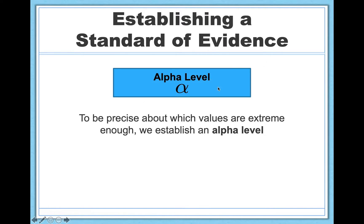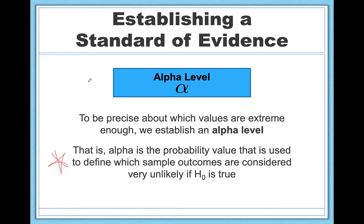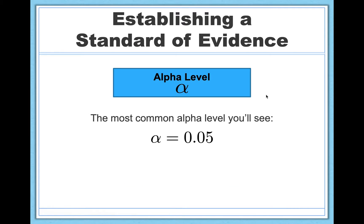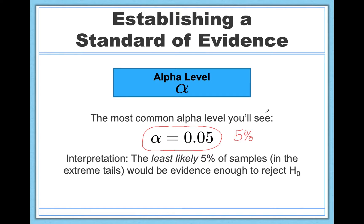The standard of evidence we call our alpha level — that's alpha, but it's not Cronbach's alpha, be careful. It's, as we often have in statistics, two different ways of referring to the same thing. Alpha is a probability or a proportion, and it's used to define which sample outcomes are considered very unlikely if the null is true. The typical alpha level used in research and science across pretty much every field is 0.05. This is a proportion, so 0.05 translates to 5%. This means we will accept the least likely 5% of samples — the most extreme 5% of possible outcomes — as good enough evidence to reject the null and say there's actually a real effect in the world.